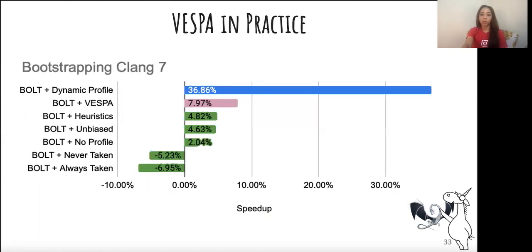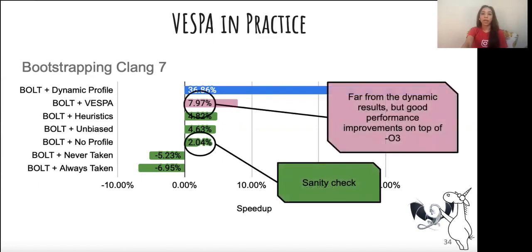Here we have the runtime results for the binary for Clang 7 compiler. The original binary was built using Clang 12. The input here is the source code for Clang itself, so the compiler is bootstrapping from its own source code. We clearly see that while using BOLT with fully dynamic profile vastly outperforms Vespa, Vespa still provides significant gains over static techniques.